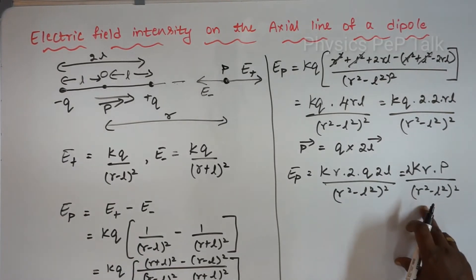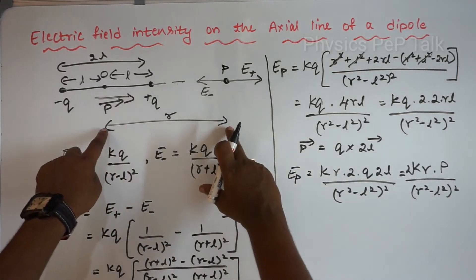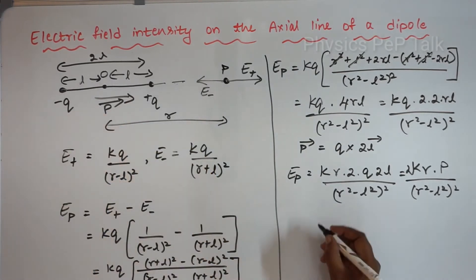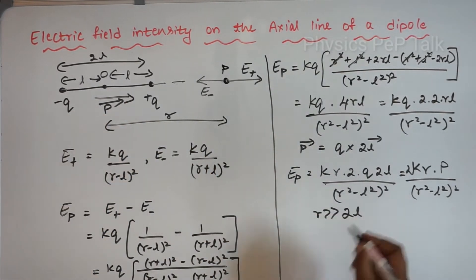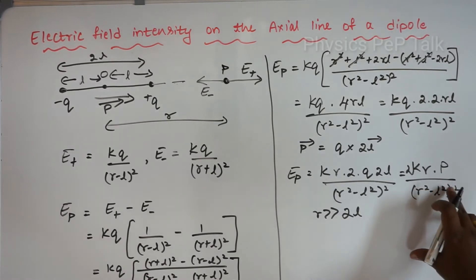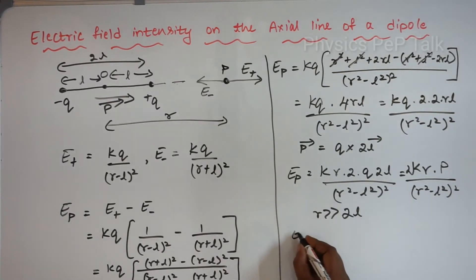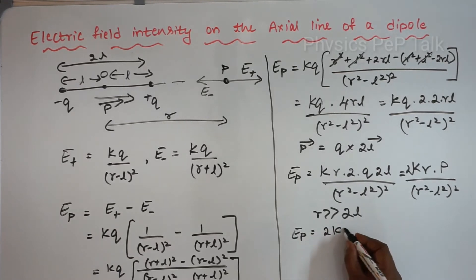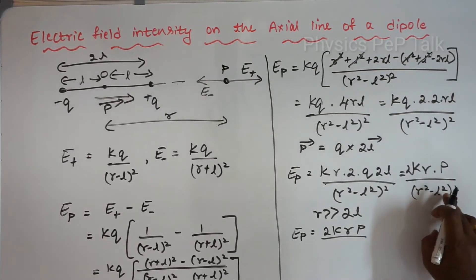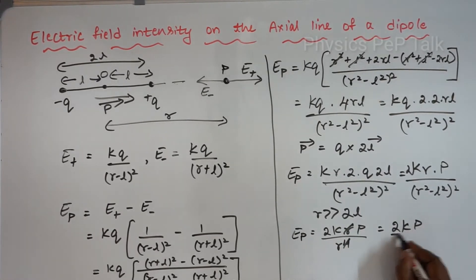Now I will consider the case where the distance R between point P and the midpoint of the dipole is very much greater than the length of the dipole L. This means R is much greater than L, so L squared is negligible compared to R squared. Therefore R squared minus L squared is approximately equal to R squared. The equation becomes E of P equals 2KR times p divided by R to the power 4, and one R cancels to give 2Kp divided by R cubed.